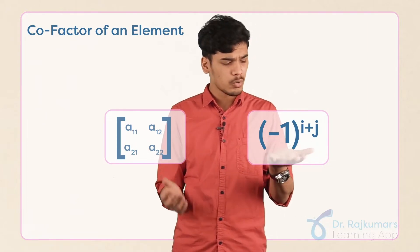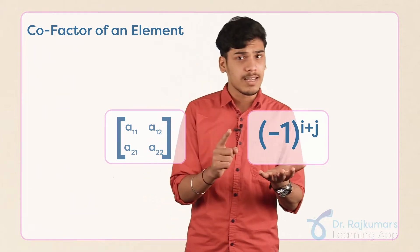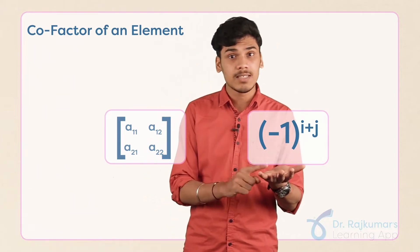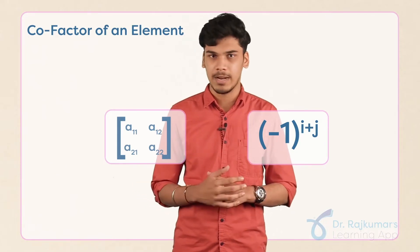So what does this minus 1 power i plus j do? It actually assigns a positive or negative sign to this minor. Then only this minor can be called as cofactor of the given element.